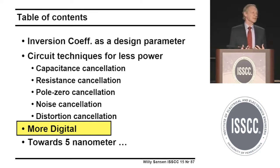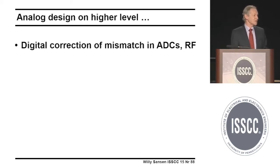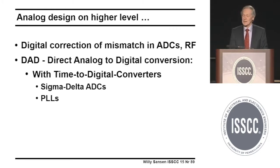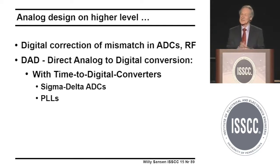If nothing works, we have to ask for digital support. The main culprit is mismatch. I can't give you hope that mismatch will get better — it's not getting better at 7 or 10 nanometer. Whatever is related to mismatch — offset in ADCs and RF circuits — you need digital correction. There is also a tendency toward direct analog-to-digital conversion: converting an analog signal to time, as in time-to-digital converters in sigma-delta ADCs and PLLs.